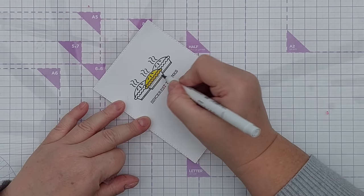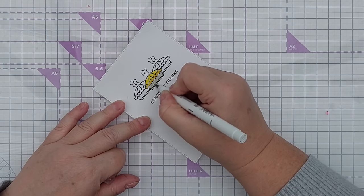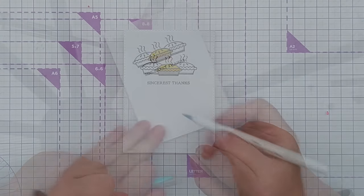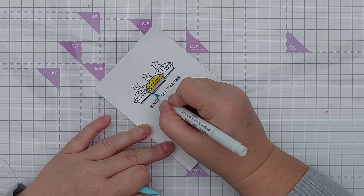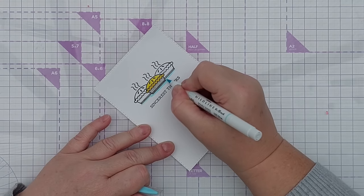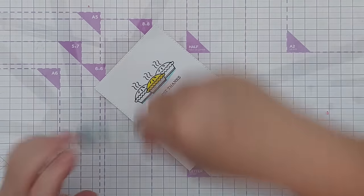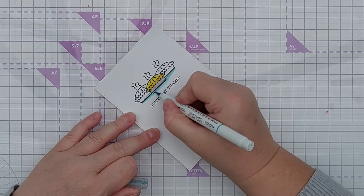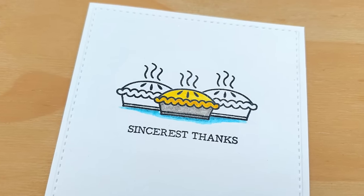I'm using the grey now to color in the pie tin. Because I heat embossed over that black ink it didn't run. I think I want to give my pies something to sit on just to bring in a slightly brighter additional color. So I've got a light blue pen and I'm just giving them like a little blue tablecloth or something to sit on. I will just go in with a darker blue to add a little bit of shadow. There you go, a little pie themed thank you card.